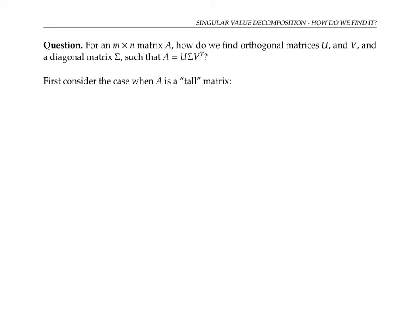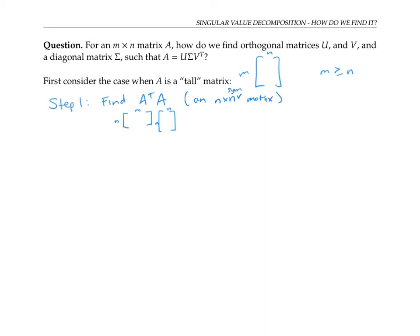First, let's consider the case when A is a tall matrix — in other words, when M is greater than or equal to N. First, we're going to find the matrix A transpose times A. Notice that will be an N by N matrix, and it'll actually be an N by N symmetric matrix, since the transpose of A transpose A is A transpose A — the same thing as we started with. We're going to find the eigenvalues of A transpose A.